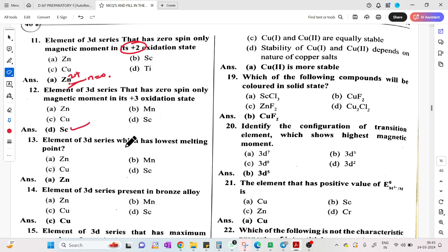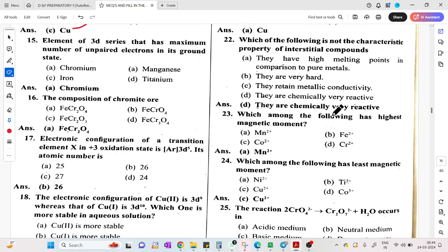Elements with zero spin only magnetic moment: Scandium. Which has lowest melting point? Zinc has lowest melting point because there are no unpaired electrons. Elements of 3D series present in bronze alloy: bronze is copper plus tin. Which compound will be colored in solid state? CoF2 because of one unpaired electron.